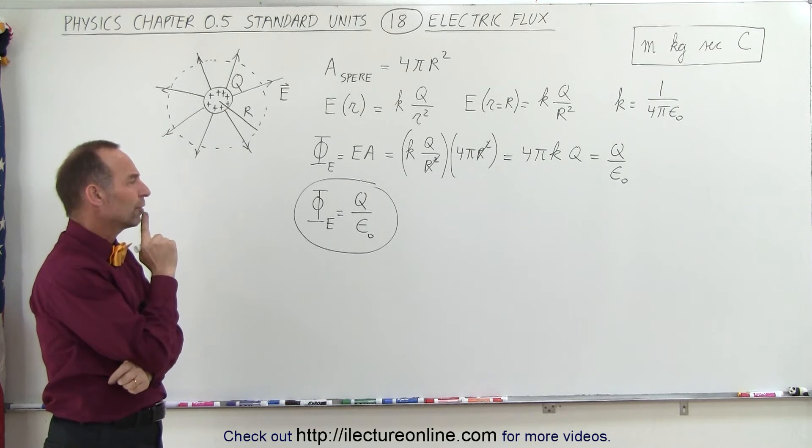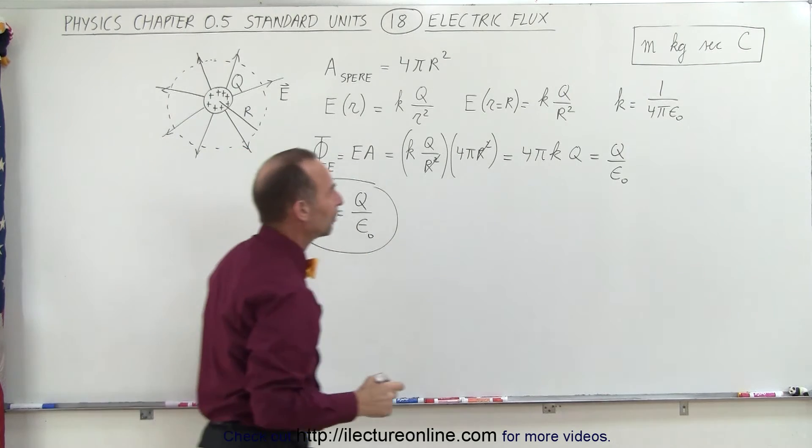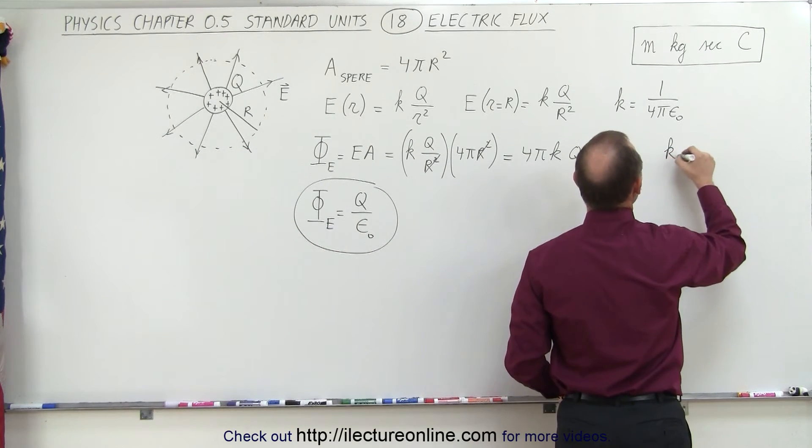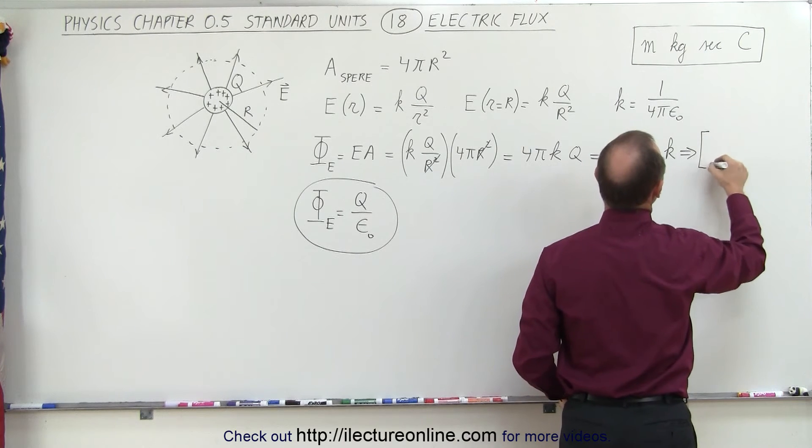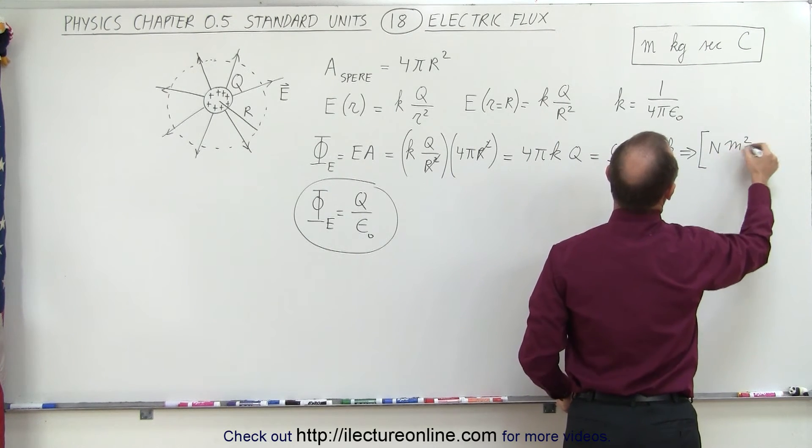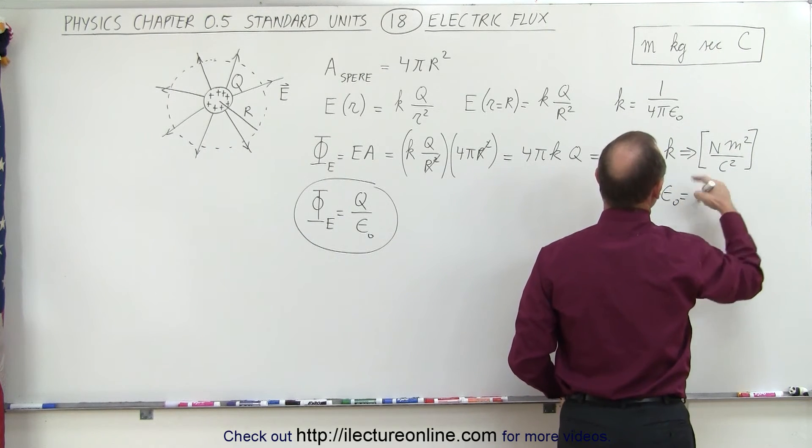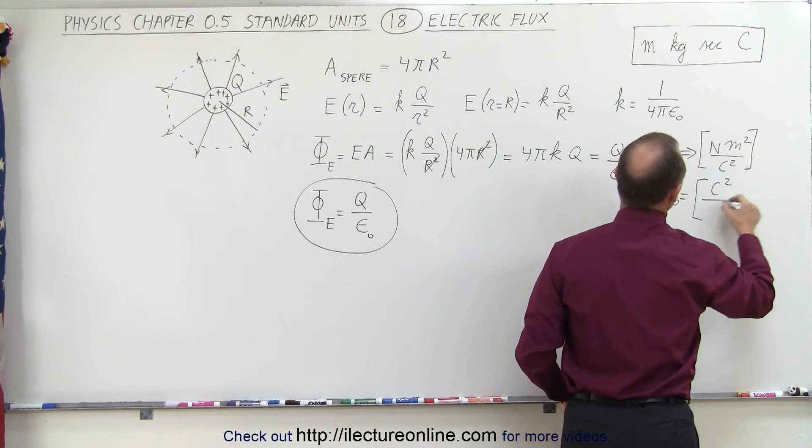So what are the units for that? Well, we have to remember the unit for epsilon sub nought. Since the units for k were equal to Newton's meter squared per coulomb squared, that means the units for epsilon sub nought is the inverse of that, which is coulomb squared divided by Newton times meter squared.